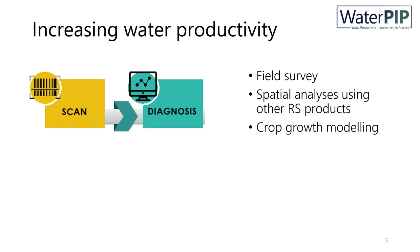Through field surveys, especially targeting the best and worst performing areas, you can get a better understanding of the underlying reasons for the variations and possible interventions to improve the low-performing areas. This is a time-consuming activity, but can provide detailed information on the status of different fields. On the other hand, more remote sensing-based products are becoming available, which can be used together with the scan to identify some of the underlying reasons. This approach can be used relatively easily for large-scale assessments and can be used for time series analysis.